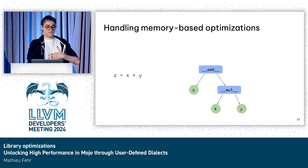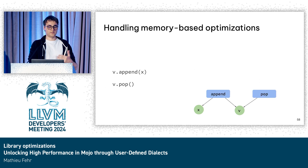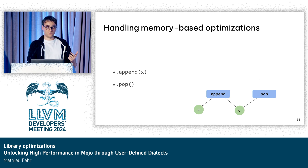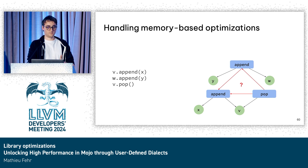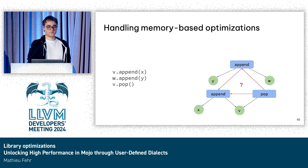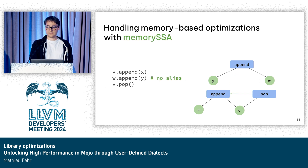We can handle simple pattern-based operations, but the problem is that something like the pushback/popback example — the equivalent in Mojo being append and pop — is more complex, because we need some kind of memory analysis. You need to know that the pop happens right after the append. If there's an operation in the middle, you don't actually know the relationships between the pop and the previous appends — you don't know if two vectors alias or not. For that, we have a smaller implementation of what's called memory SSA in LLVM, which tells you, depending on whether aliasing exists, if the optimization can trigger.